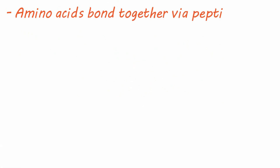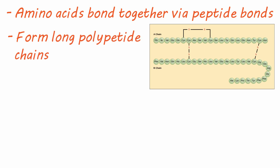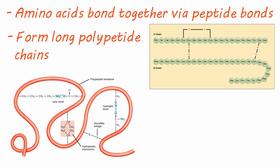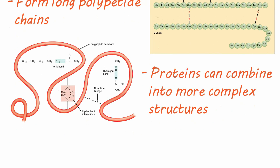These amino acids bond with each other through a peptide bond and form long chains, referred to as polypeptide chains. These chains then fold and bond with themselves to form a complete protein, and sometimes they combine with other proteins to make a more complex protein structure.